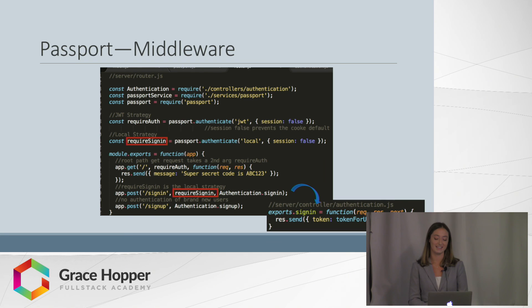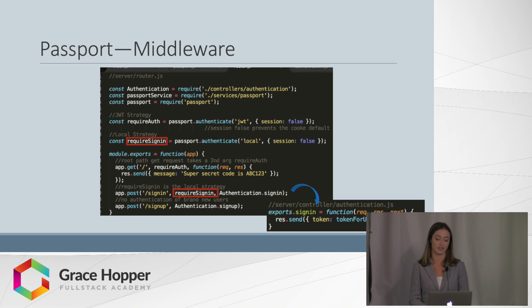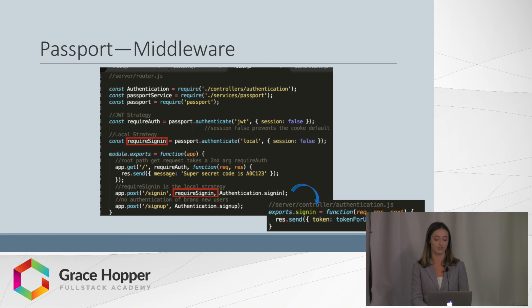Similarly, the passport library's authentication method can be used to hook up the local strategy and employ it in the sign-in route. The require sign-in pre-check intermediates the sign-in route as the second argument. Only once the email and password are matched with what's on file in the database will the user receive his or her token, as shown in the bottom right sign-in function.